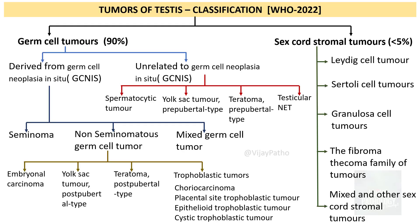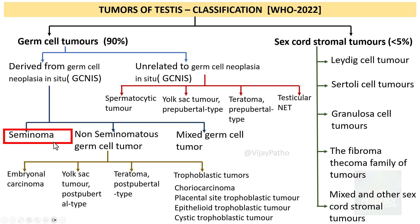Let us recollect the classification of testicular tumors. This is the WHO 2022 classification. We saw that it was classified into germ cell tumors and sex cord stromal tumors. Majority — around 90% of testicular tumors — are germ cell tumors. These are further sub-classified into those derived from germ cell neoplasia in situ and those unrelated to germ cell neoplasia in situ. In today's session I will be concentrating only on seminoma.